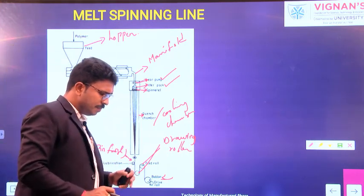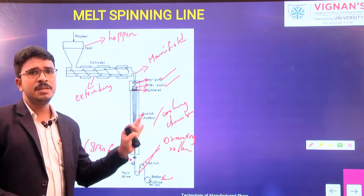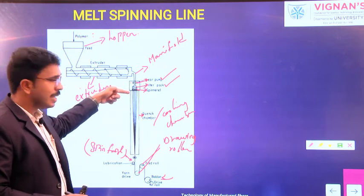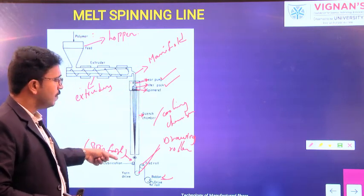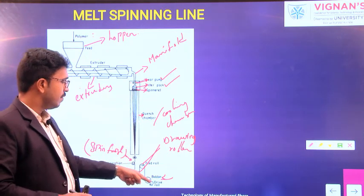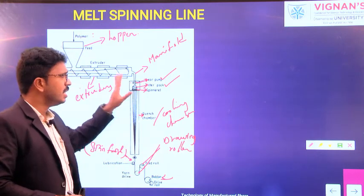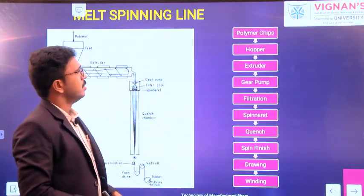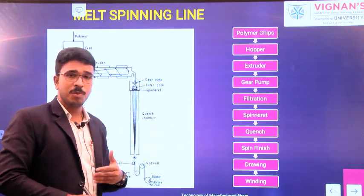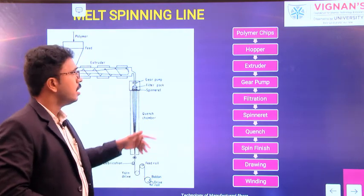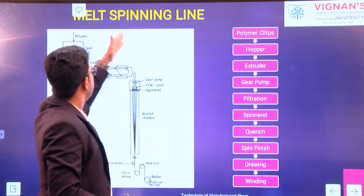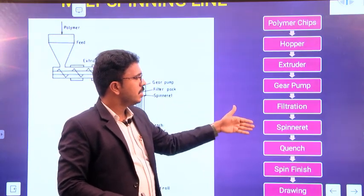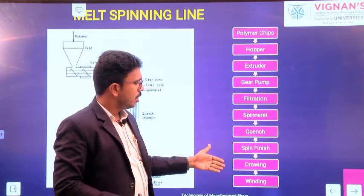So these are the different elements present in the melt spinning line. Right from hopper, extruder, manifold, gear pump, filter pack, spinneret, quenching chamber or cooling chamber, spin finish application, drawing rollers, and finally winding onto bobbins. The polymer passes through these elements in this order: polymer chips are fed to the hopper, then subjected to extruder, then gear pump, filtration, spinneret, quenching, spin finish application, drawing, and then winding.